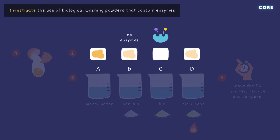Solution B is less effective than solution C, because it doesn't contain enzymes. Solution D is also less effective because boiling the water denatures the enzymes. Cloth A remains largely unchanged due to the absence of a cleaning agent.